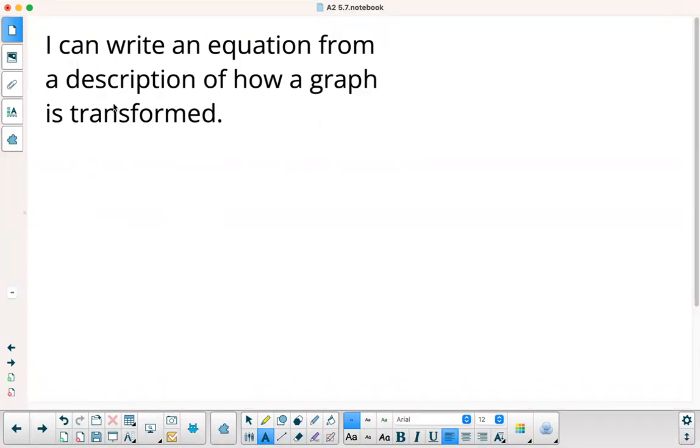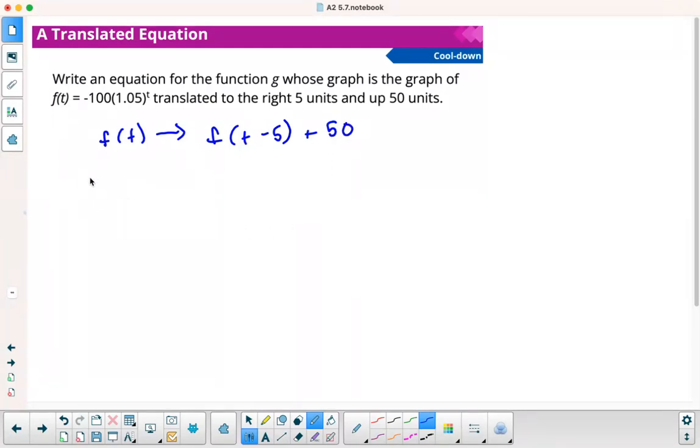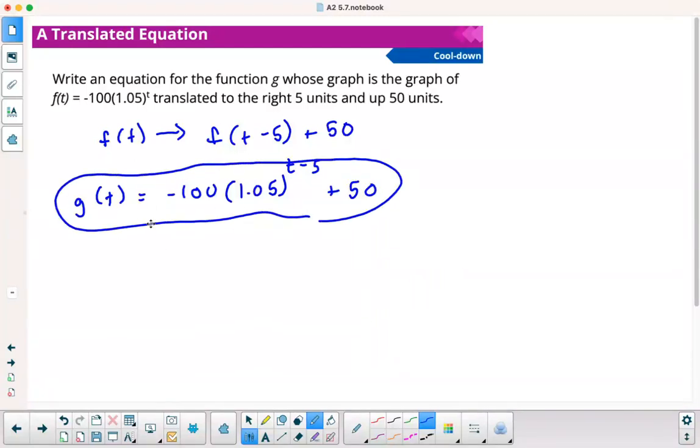Our goal, I can write an equation from a description of how a graph is transformed. Go back to that first slide and my second slide and check the rules. Those would be very helpful. Last thing, write an equation for the function g whose graph is the graph f of t translated right 5 and up 50. We're going to take f of t and that's going to go to f of t minus 5. And then the up 50 means you add 50 on. Call it g of t negative 100 times 1.05. So I replace t with t minus 5 and then I add 50 on. If you graphed this function g of t and graphed the original f of t, it would look like it did these transformations. Thanks for watching this video. I hope you enjoyed it and we'll see you next time.